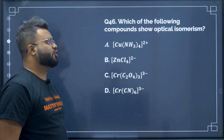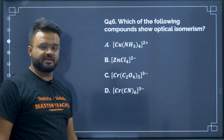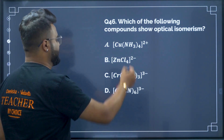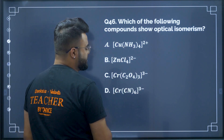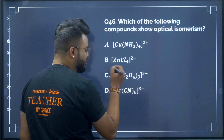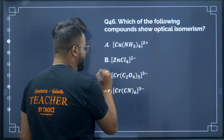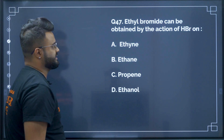Question number 46: which of the following compound shows optical isomerism? It is a direct question. Optical isomerism is shown by tris(oxalato)chromate(III) — trioxalatochromium(III). Therefore option C will be your correct answer.